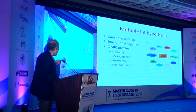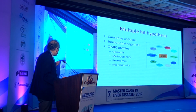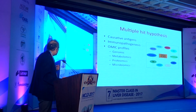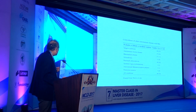There is now increasing belief in a multiple hit hypothesis. There are causative antigens or agents, and the omic profiles — genomics, metabolomics, proteomics, microbiomics — are all combining to result in autoimmune liver disease. This is one example of overlaps of other autoimmune diseases in PBC, showing that a number of organs are associated, but it's not specific.